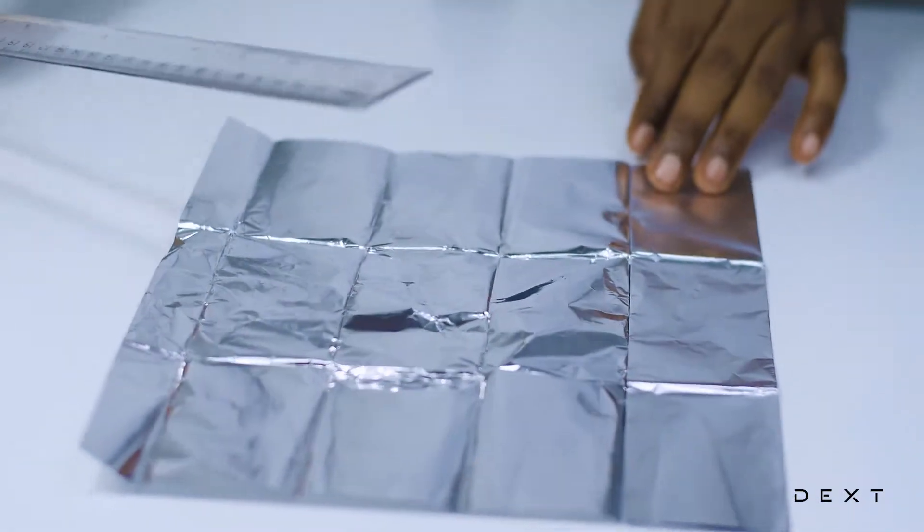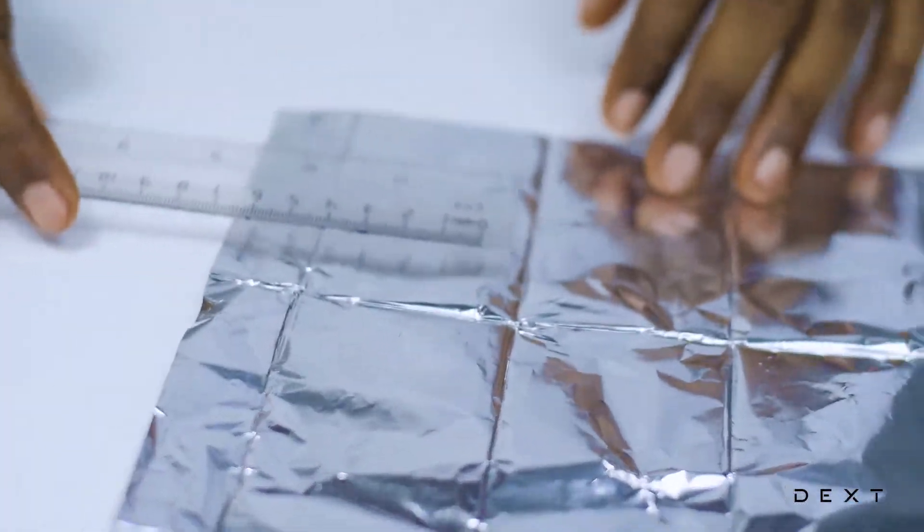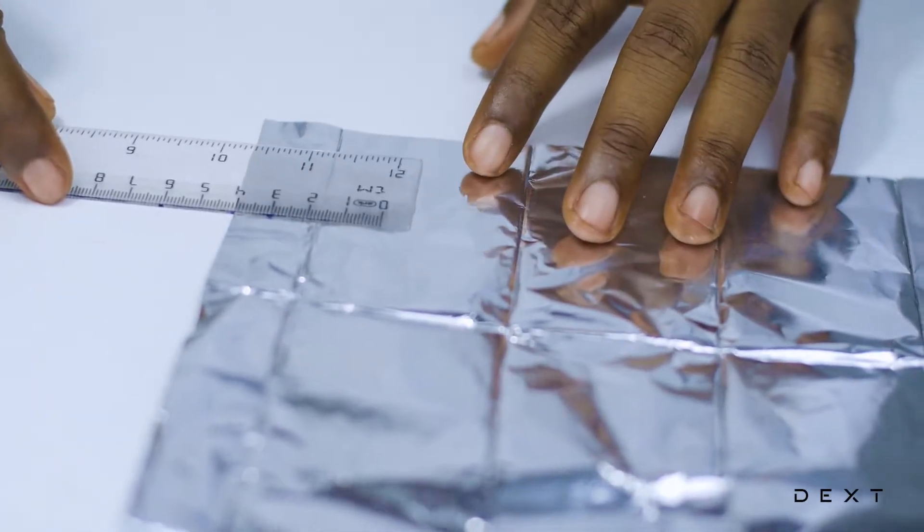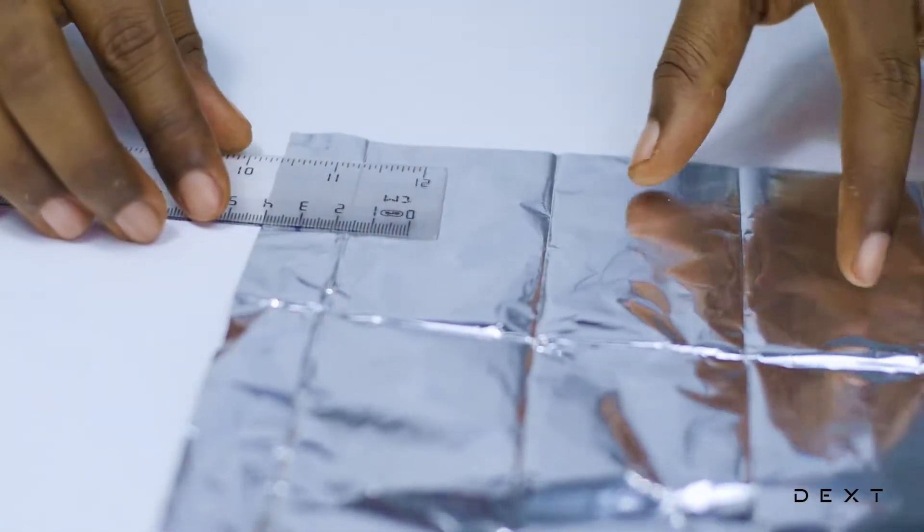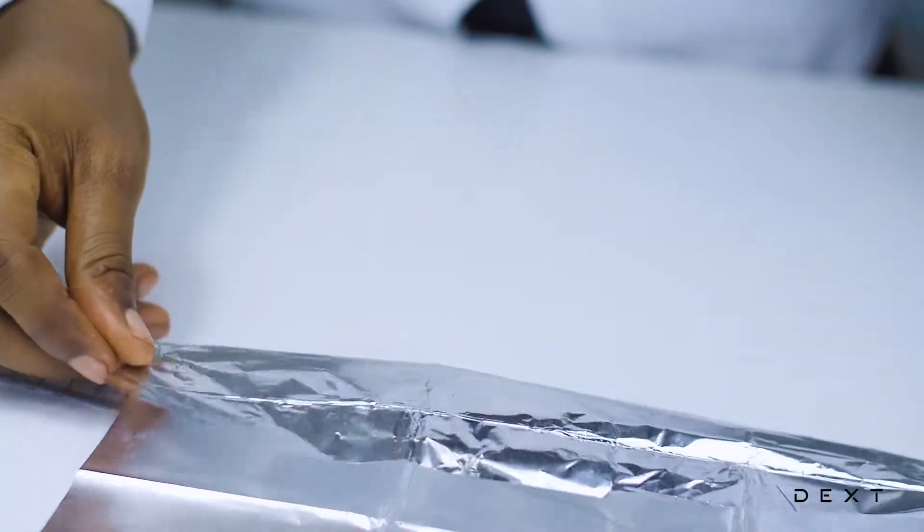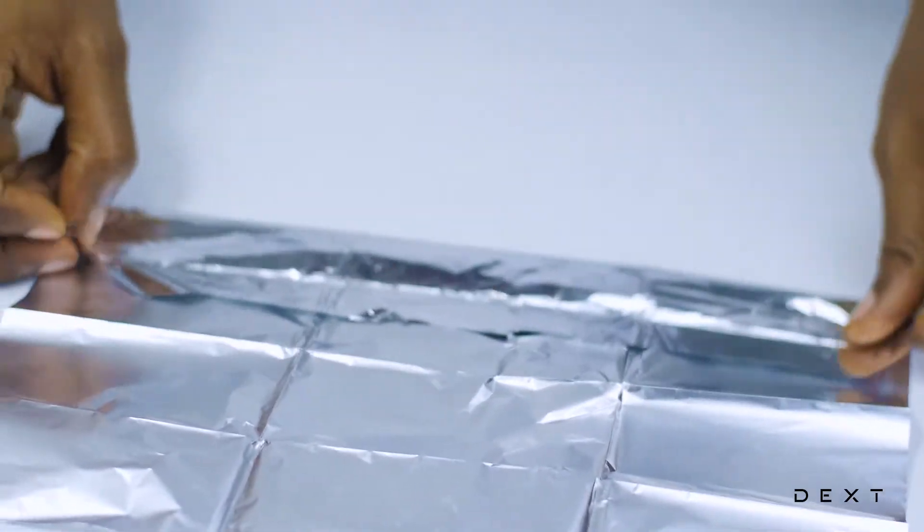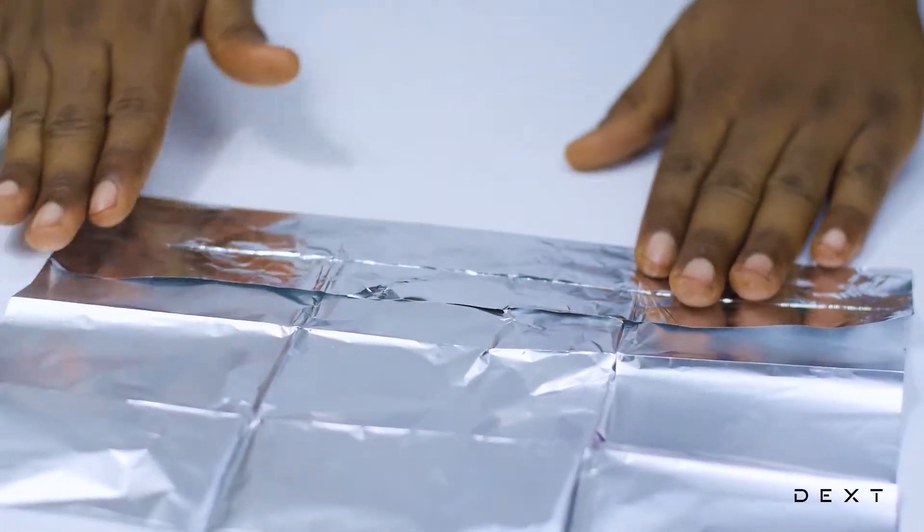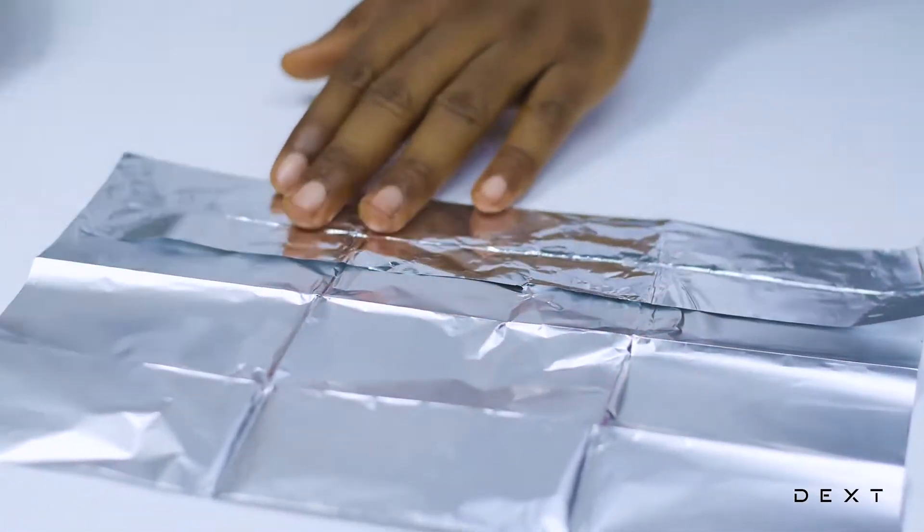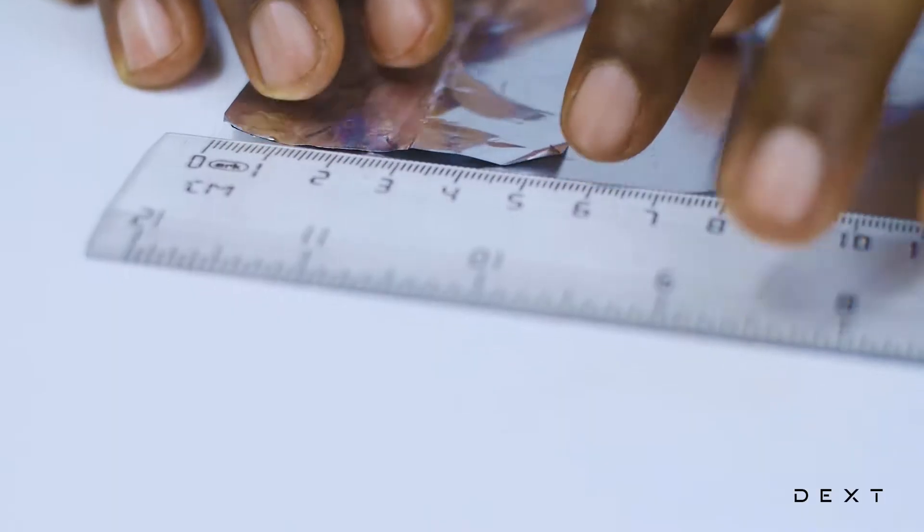We get a ruler and then we are going to measure 4 cm and fold our aluminum foil at that point. Let's just fold about the point where we approximate will be around our 4 cm mark. And then we go back and measure again to confirm. As you can see, it is a little bit more than 4 cm.